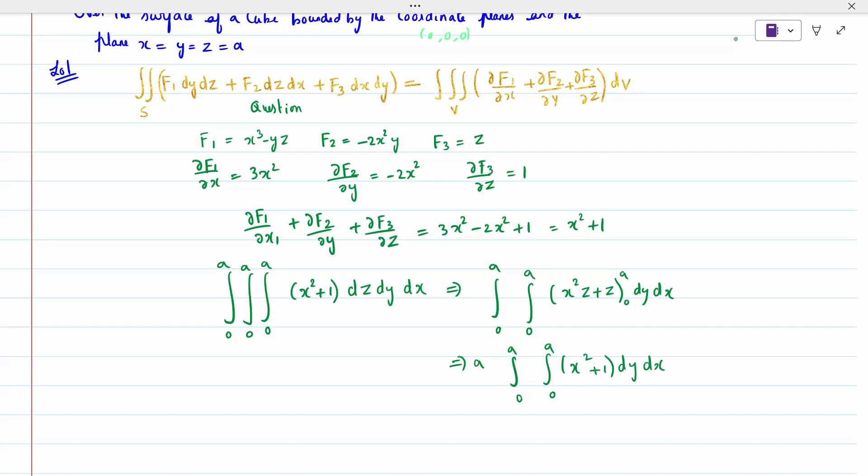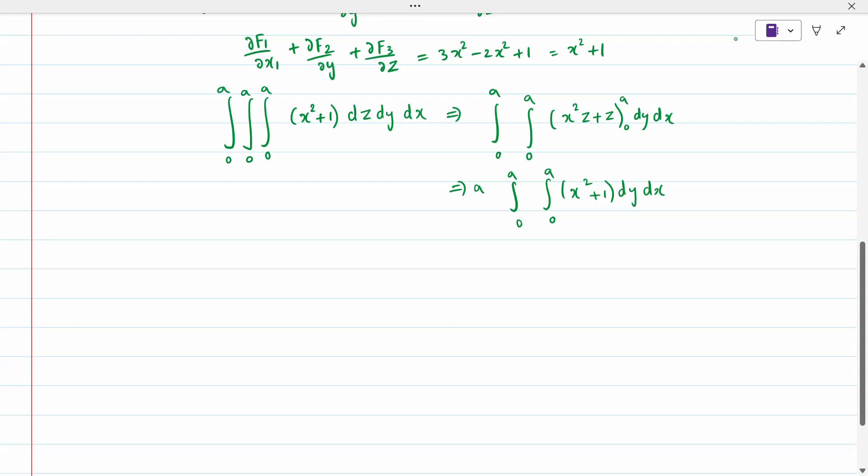Again with respect to y I have to integrate it. When I integrate y, a from 0 to a. The y term is not there, so when I integrate it, I keep x² + 1 as constant. y is 0 to a, dx. Again a is taken outside, so a² from 0 to a, (x² + 1) dx.